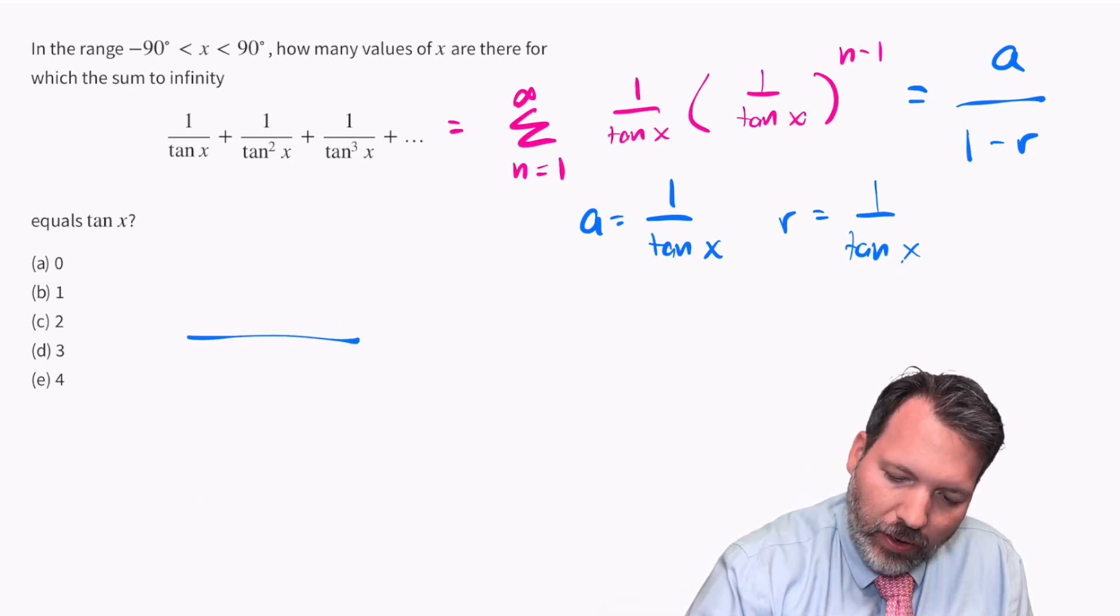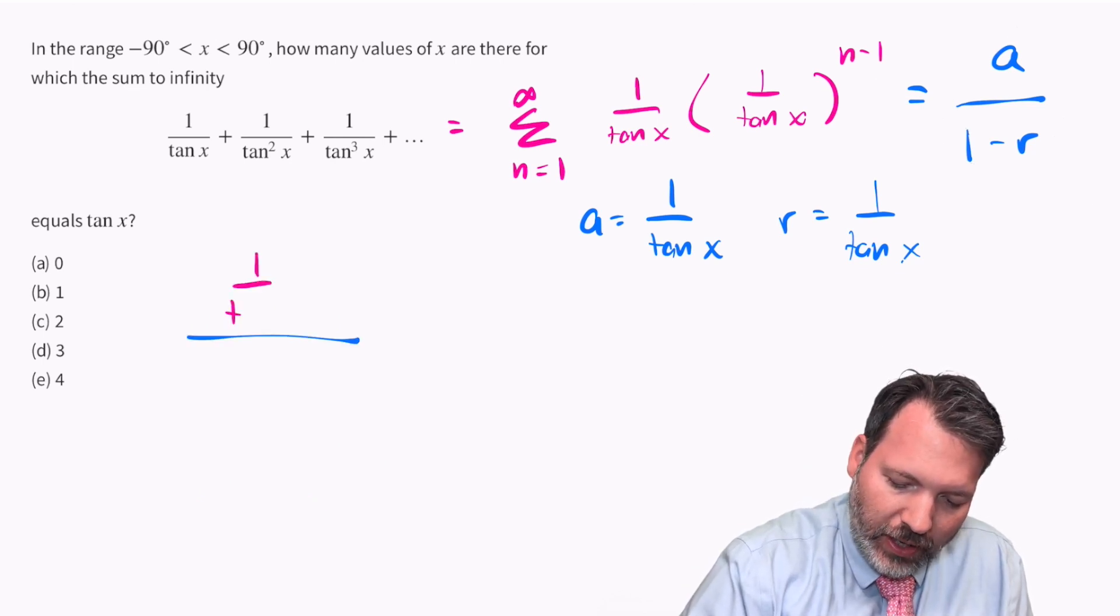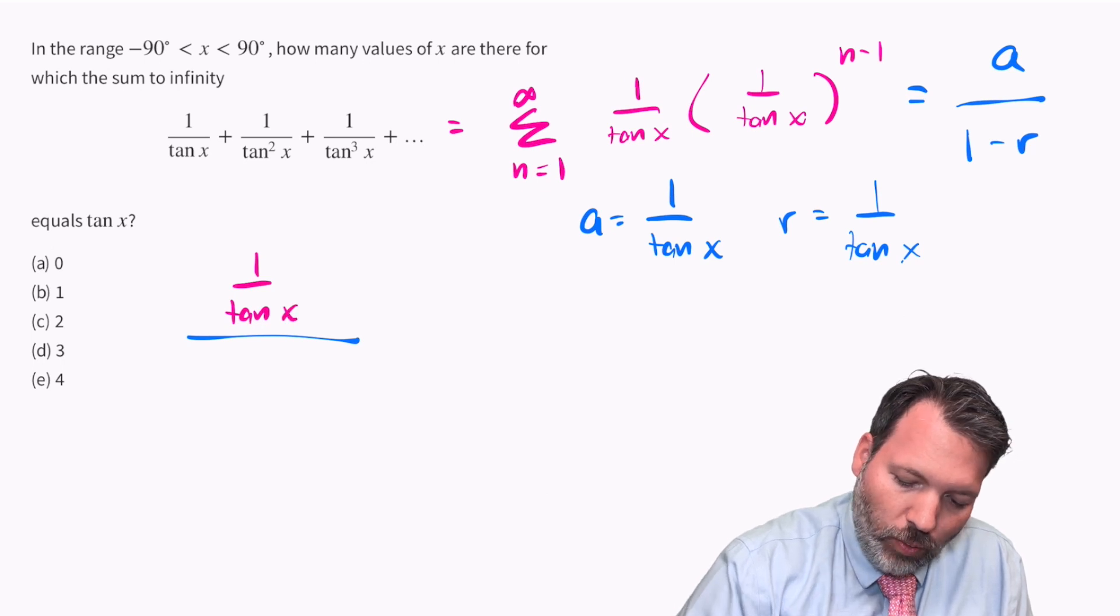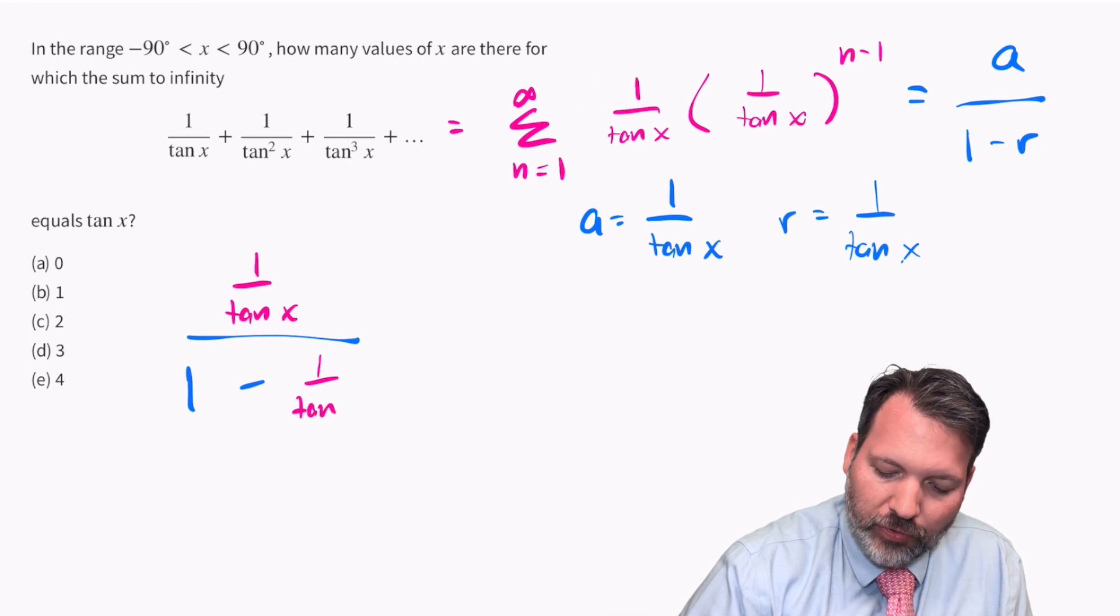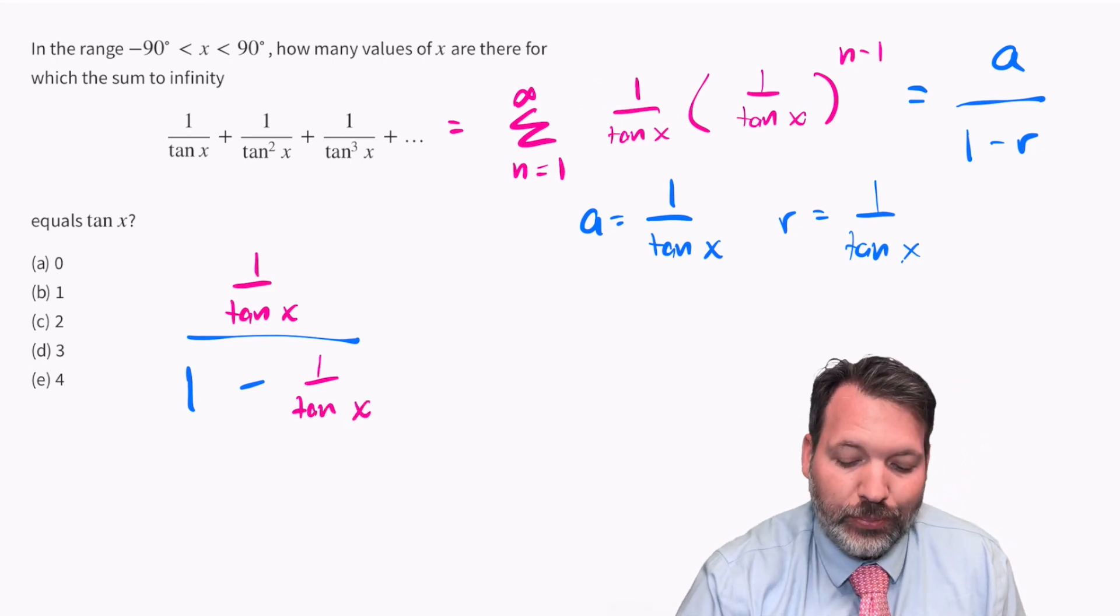Let's go ahead and calculate out 1 over tangent x. That was our initial value divided by one minus the ratio, which again happened to be the same thing, 1 over tangent x. Now to simplify this a little bit, let's multiply everything by tangent x.